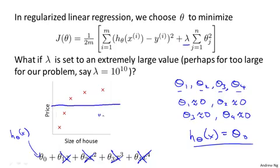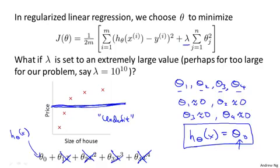That is akin to fitting a flat horizontal straight line to the data, and this is an example of underfitting. In particular, this hypothesis, this straight line, just fails to fit the training set well. It doesn't go anywhere near most of our training examples. Another way of saying this is that this hypothesis has too strong a preconception or too high a bias that housing prices are just equal to theta 0. Despite the clear data to the contrary, it chooses to fit a flat horizontal line to the data.